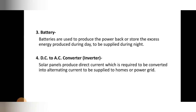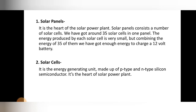The fourth main component is a DC to AC converter — the inverter. Solar panels produce direct current which is required to be converted into alternating current to be supplied to homes or power grids. So we first invert the DC into AC and then we can use that current. These are the four main components of the solar system: solar panel, solar cell, battery, and inverter.